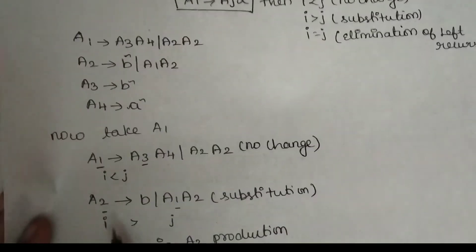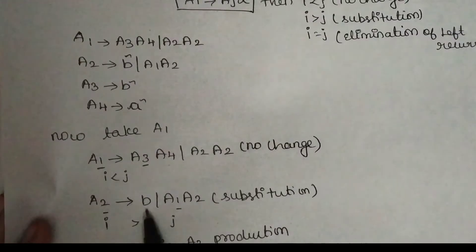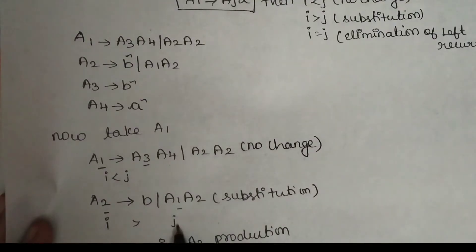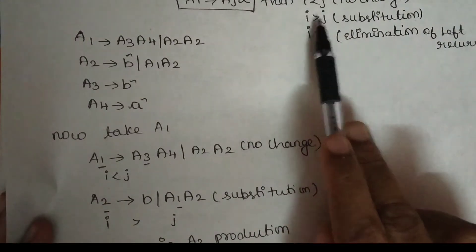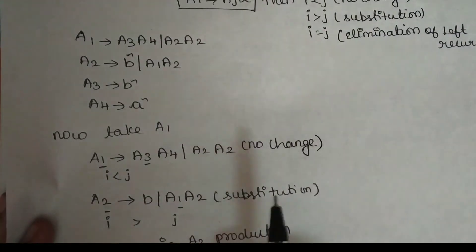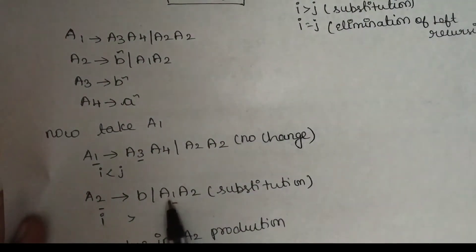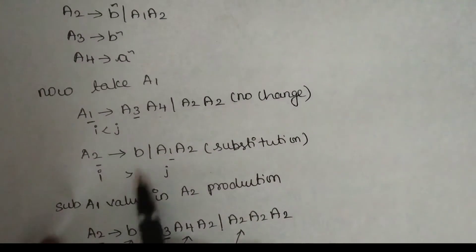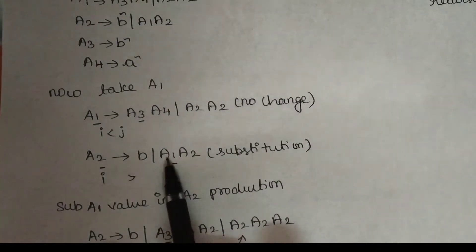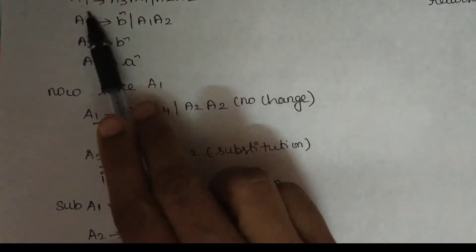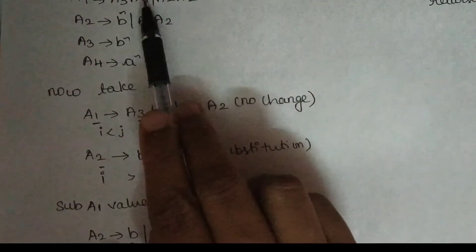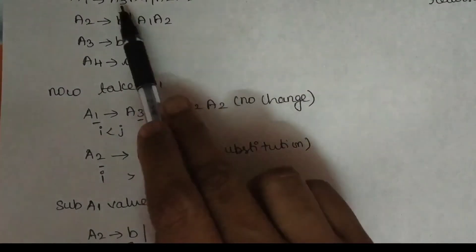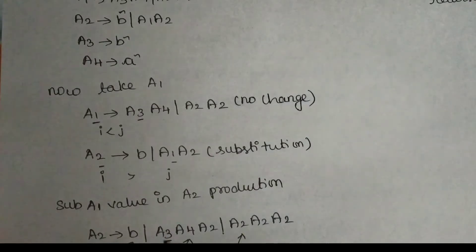So we will add the production: A2 goes to B, A1. A2 goes to B. Now we check: this is the i value and j value, i greater than j — use the substitution rule. We substitute A1: the value which can be found, substitute into A2 productions. A1 substitutes with A3 and A4.